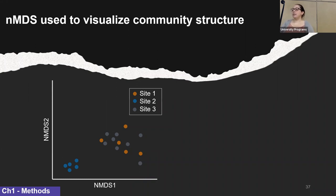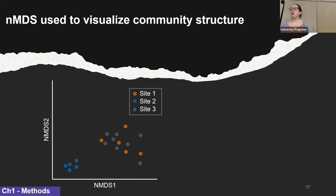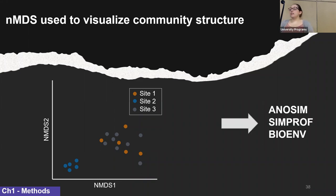In addition to modeling univariate metrics, I will also be examining long-term trends in community composition and abundance through multivariate methods. I'll be looking at multivariate community structure using nonmetric multidimensional scaling plots, which take multivariate datasets like community matrices and calculate points based on a similarity matrix — in this case, Bray-Curtis. In these plots, points close to each other represent multivariate data that is similar. Each point represents the organismal community from one site at one sampling period.